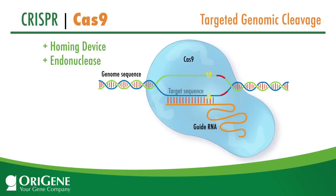The gRNA contains a 20 nucleotide sequence linked to a tracer RNA scaffold. The targeting sequence is immediately upstream of a protospacer adjacent motif or PAM. This is sufficient to direct the Cas9 nuclease to the complementary site in the genome and create a double-stranded break.